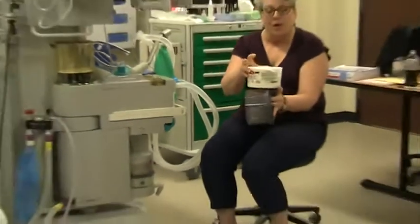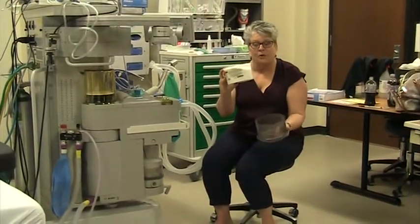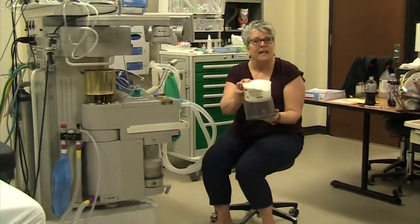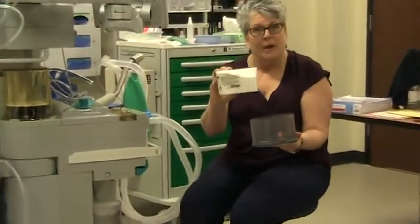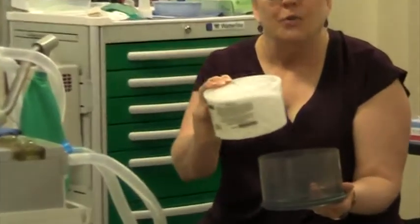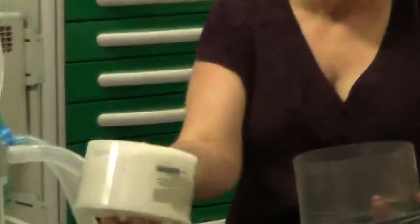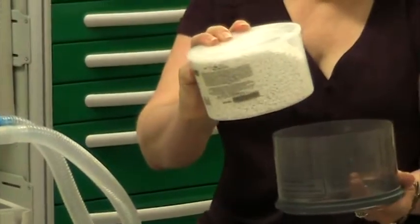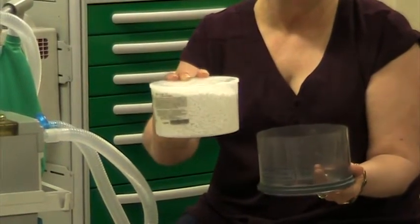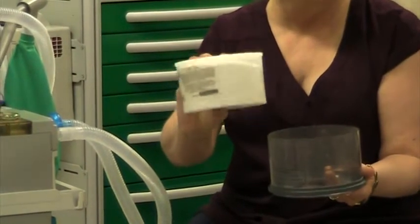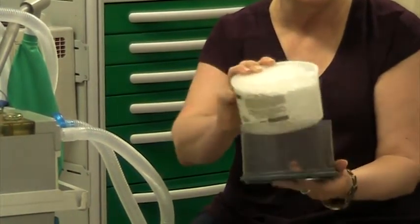This machine takes canisters of CO2 absorbent which fit into the receptacle. When you unwrap this from the package, you need to shake it over a trash can to get out the extra dust and stuff. We do not want this going into the patient's lungs.